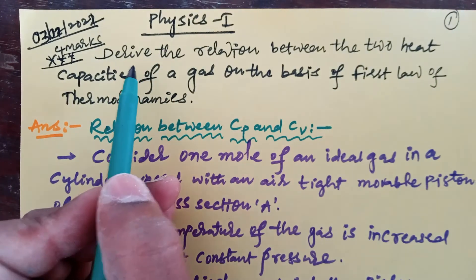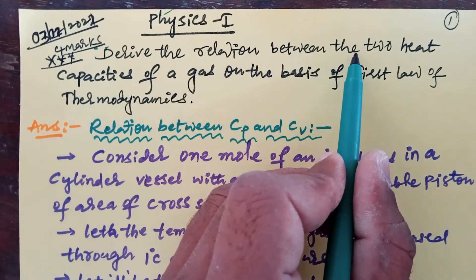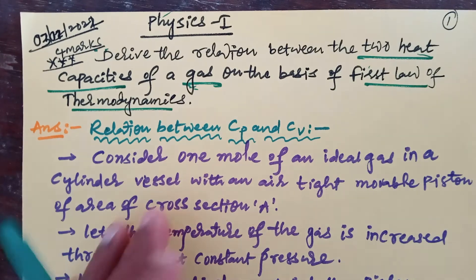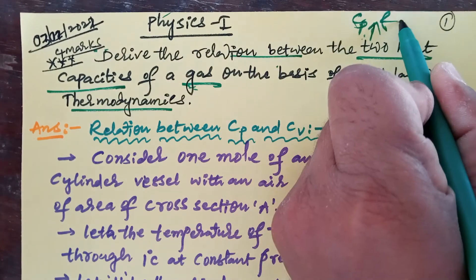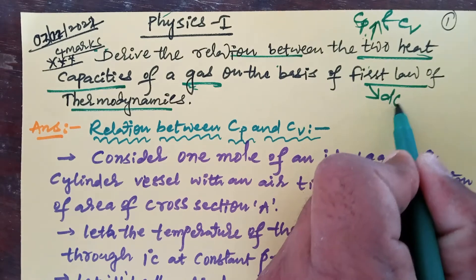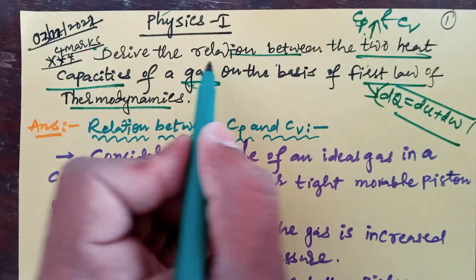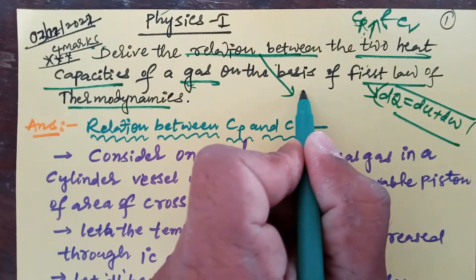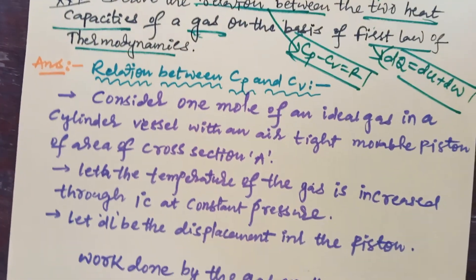This question is very, very important for the annual examination from thermodynamics in physics first year: derive the relation between the two heat capacities of a gas on the basis of the first law of thermodynamics. The two types of heat capacities are: specific heat capacity at constant pressure (Cp) and specific heat capacity at constant volume (Cv). Using the first law of thermodynamics, dQ = dU + dW, we easily find the relation Cp minus Cv equals R.